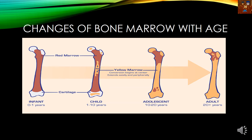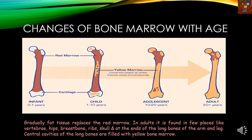Now we will see how the bone marrow changes with age. From the infant age, as the age progresses towards the adult, the amount of red bone marrow gradually decreases and it is replaced by the yellow bone marrow. When the person is in the infant stage, from 0 to 1 years, almost the total cavity of the bone is filled with red bone marrow. As the child grows from the child stage to adolescence, around 10 to 20 years, almost all the shaft or cavity of the bone is filled with yellow bone marrow. In the adult age, 20 plus, only red bone marrow is present in the head region of the bone; otherwise, the total cavity is filled with yellow bone marrow.